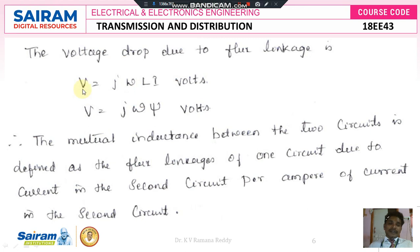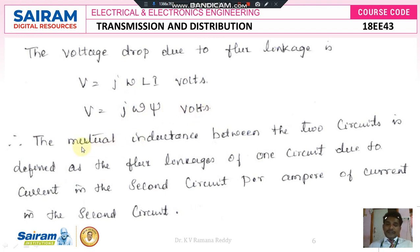Since inductance is a reactive element, it is expressed in imaginary form. That is V is equal to J into XL into I, where XL means omega L. Therefore V is equal to J into omega L into I volts, that is omega into L into I. Since LI is nothing but ψ, we can replace the formula: V is equal to J omega ψ volts.